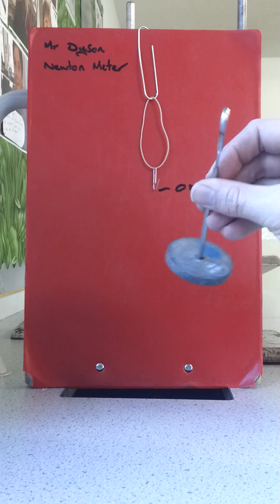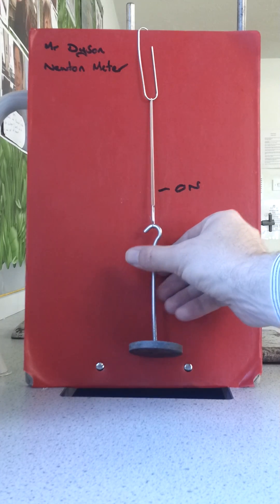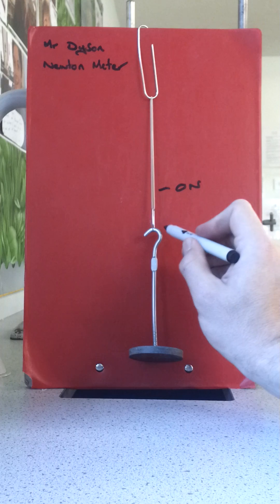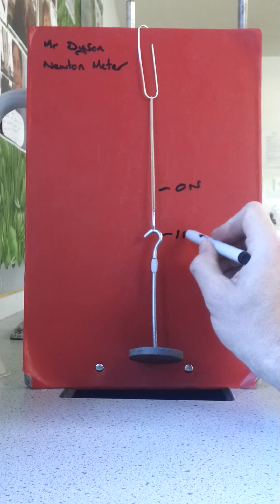Here I've got a 100 gram weight. I'm going to hang it off. I've made a newton meter. I'm going to take my pen, and at the bottom of the paper clip, I'm going to mark that as being one newton.